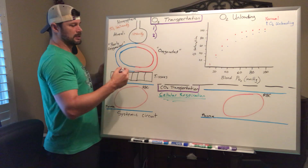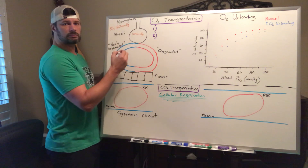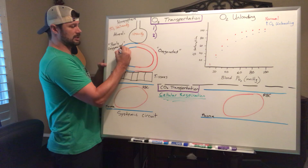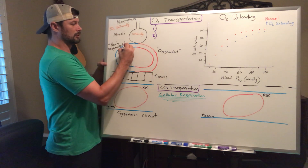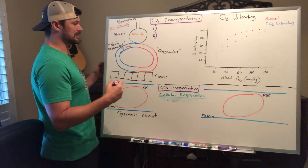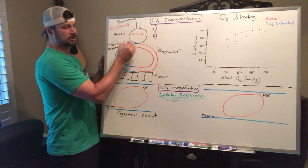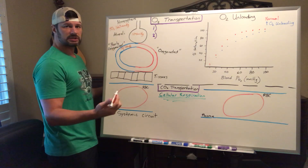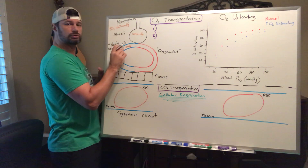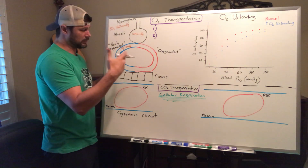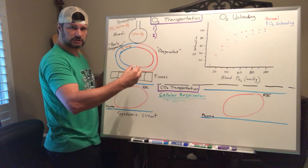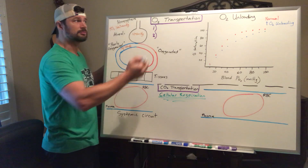Poorly oxygenated blood returning to our lungs has a partial pressure of oxygen of approximately 40 mmHg — it can be a little less depending on cellular metabolism. This blood is moving toward the lungs, and since everything moves from an area of high to low, oxygen moves from the alveolus into the pulmonary arteries. As it does, the partial pressure of 104 moves toward 40, and that 40 increases as hemoglobin becomes saturated.